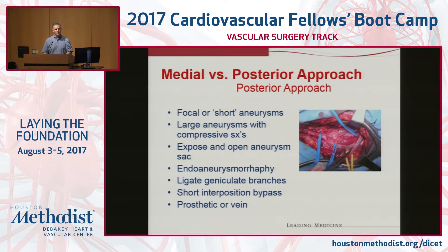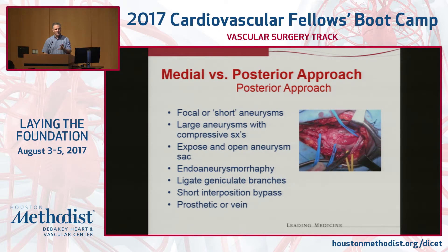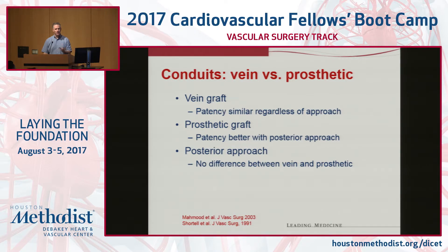The posterior approach is a neat operation. It's good for focal or short aneurysms, and for large aneurysms with compressive symptoms where you want to debulk. You expose and open the aneurysm sac, place an interposition graft, perform an endoaneurysmorraphy, and wrap the aneurysm sac back over the graft. You can ligate the geniculate branches, which reduces the chance of progressive enlargement. Prosthetic and vein grafts both do well in this approach. Vein graft patencies are similar regardless of approach, while prosthetic graft patencies are better in the posterior approach versus medial.